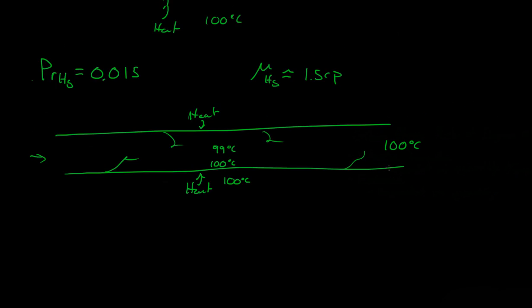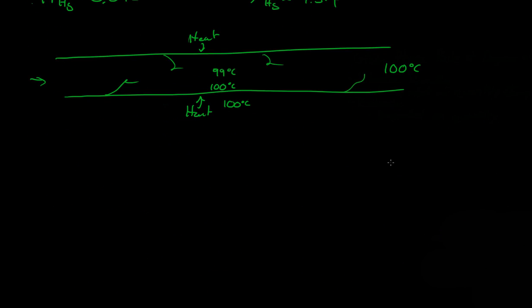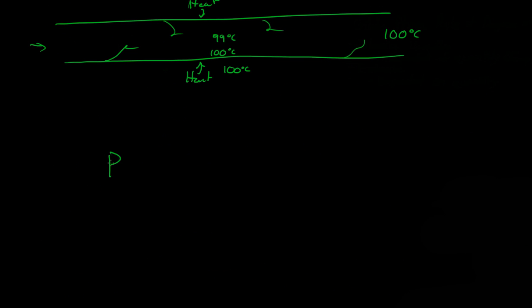So, very high K values. Where we said that the Prandtl number was equal to the viscosity times the heat capacity, all over K. So this K for Mercury is high.